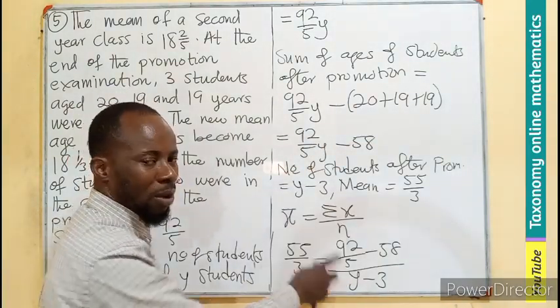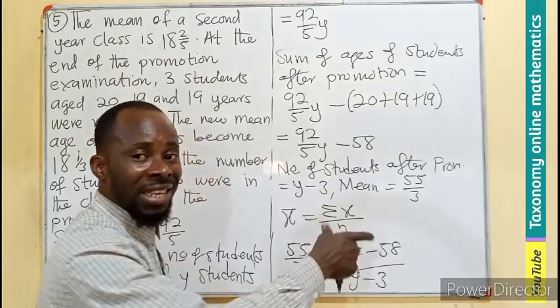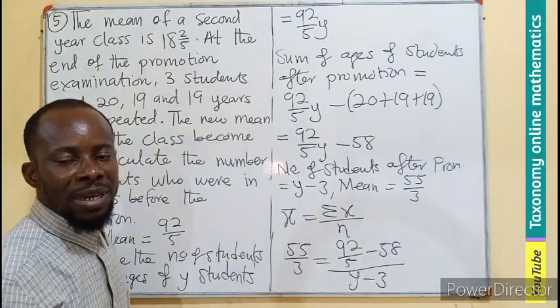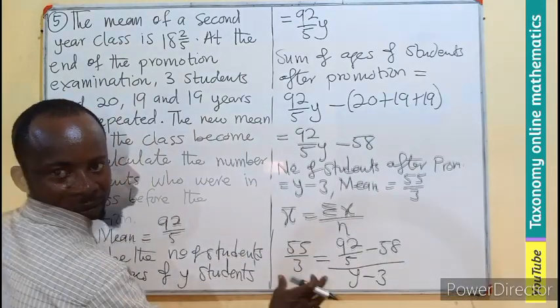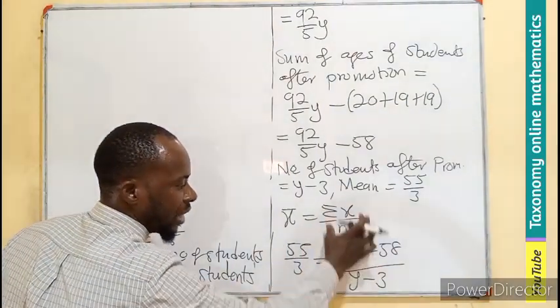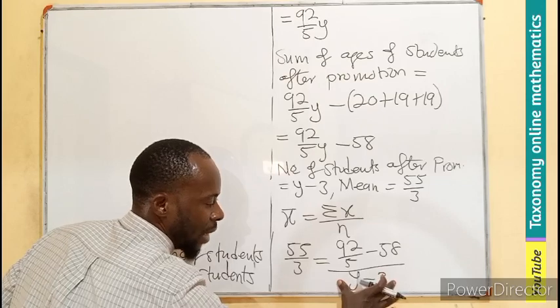After the promotion, the number of students decreases, the sum of ages also decreases, hence the mean also decreases. We are going to treat this as one term, the numerator. Taking this as the LCM, multiplying the left-hand side and the right-hand side.